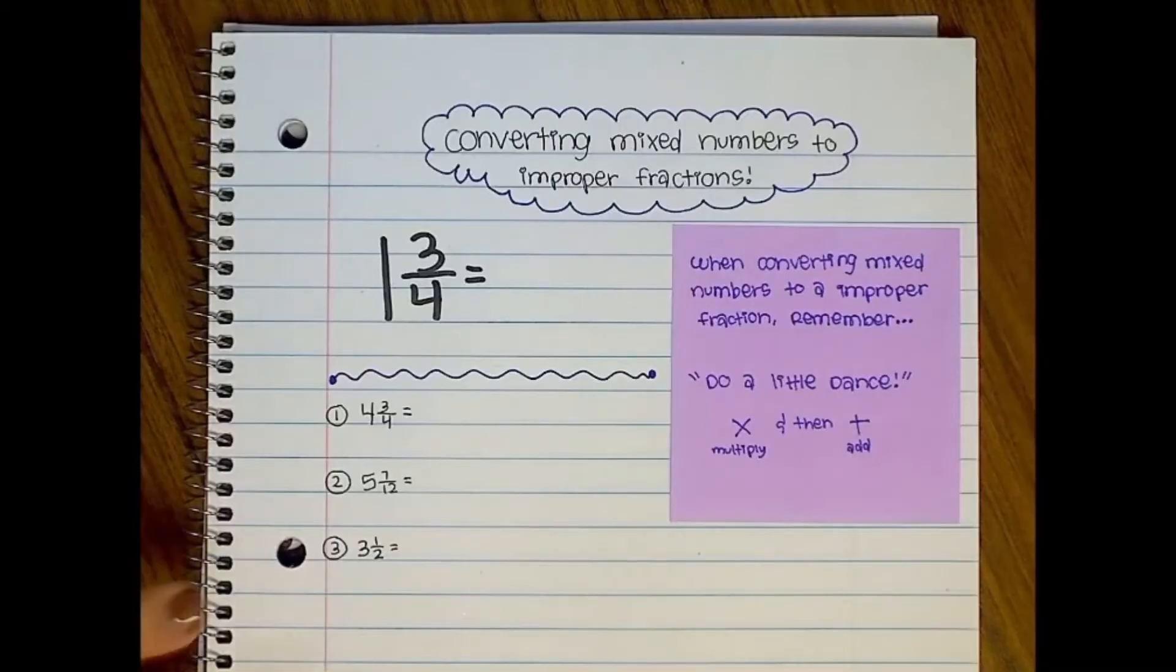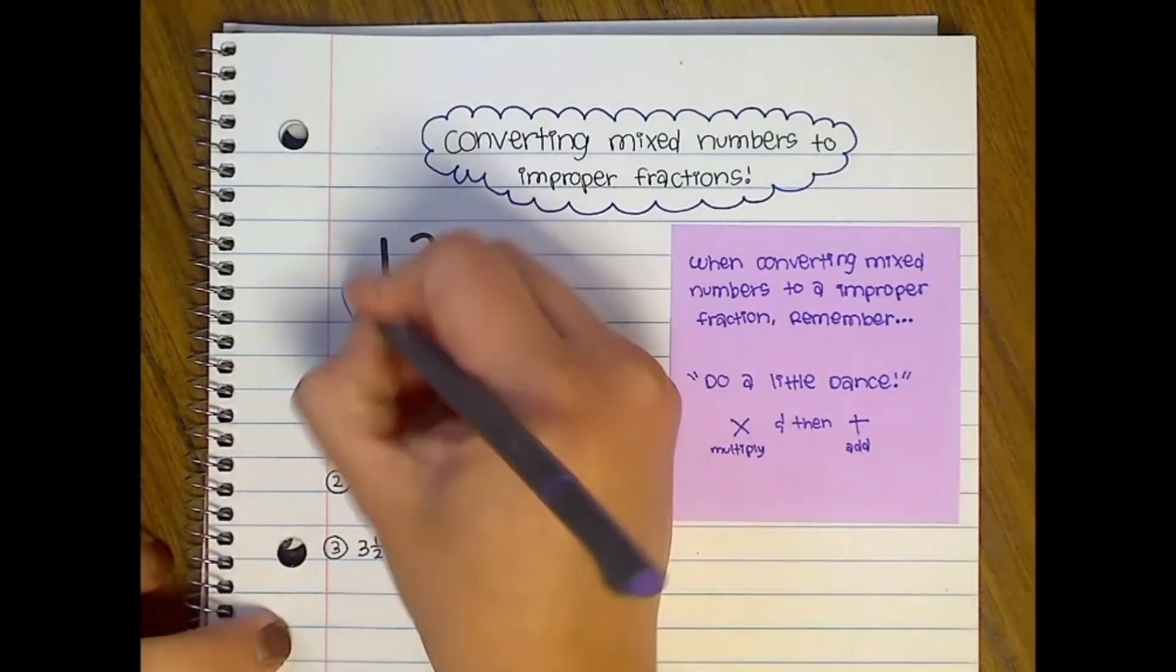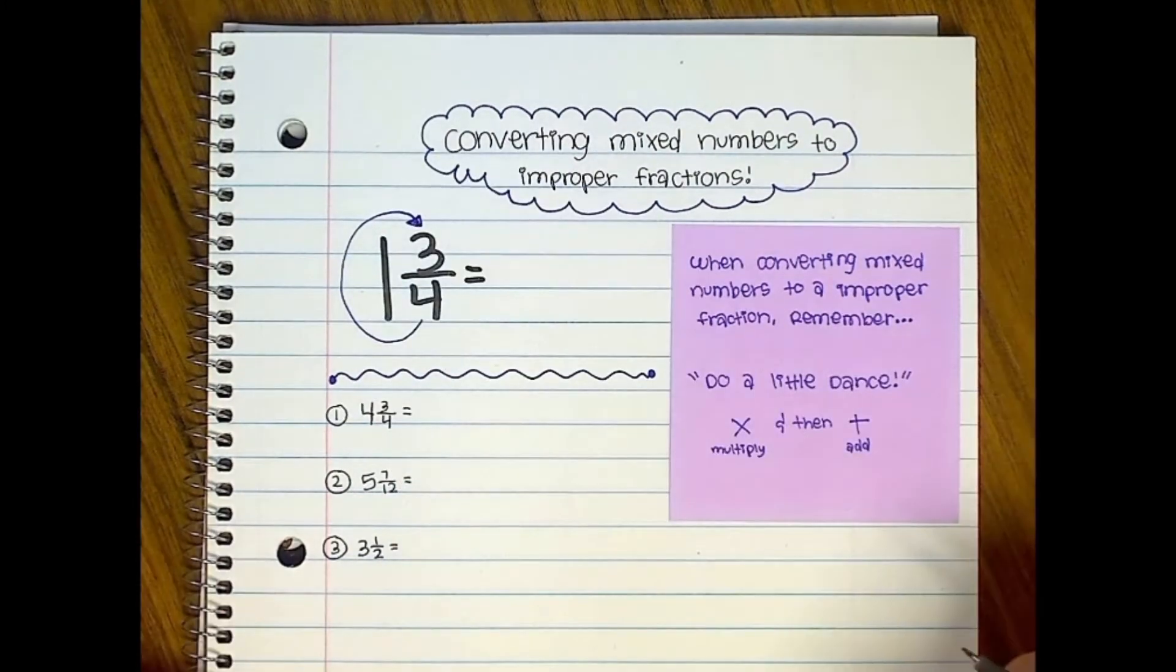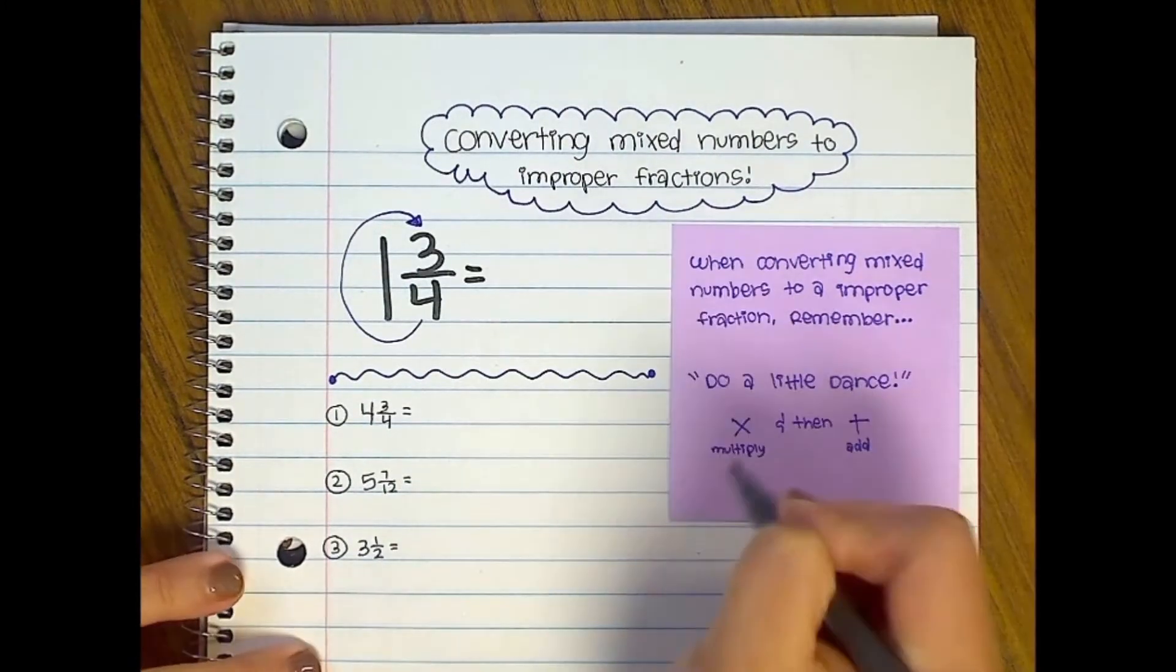So what does that mean? You basically are going to do a little dance. In class we always do this cute little arrow, and you're going to say, okay, I'm first going to multiply and then add.